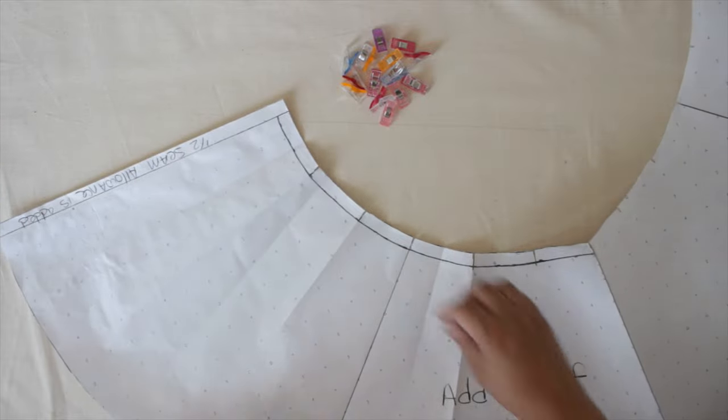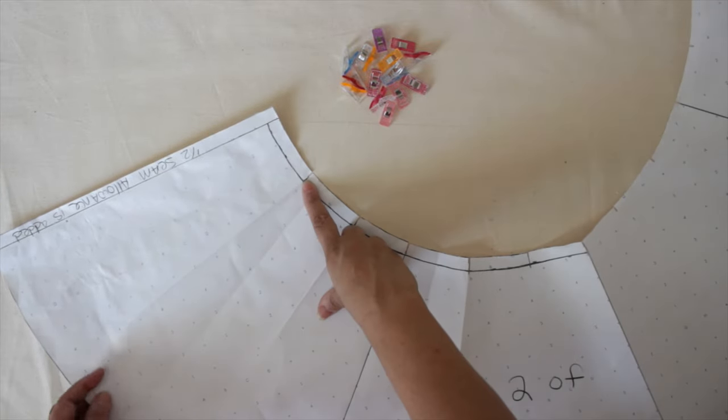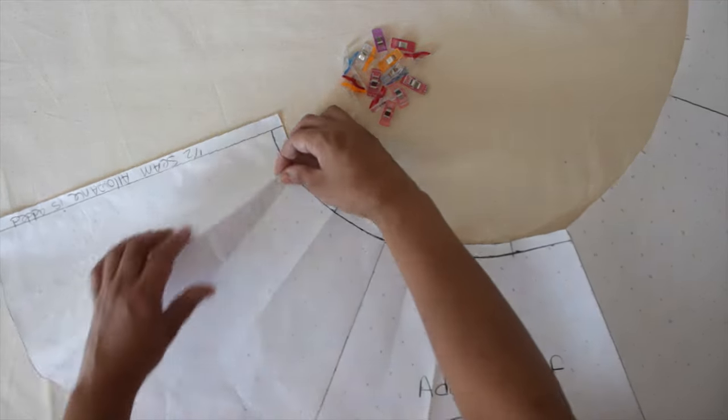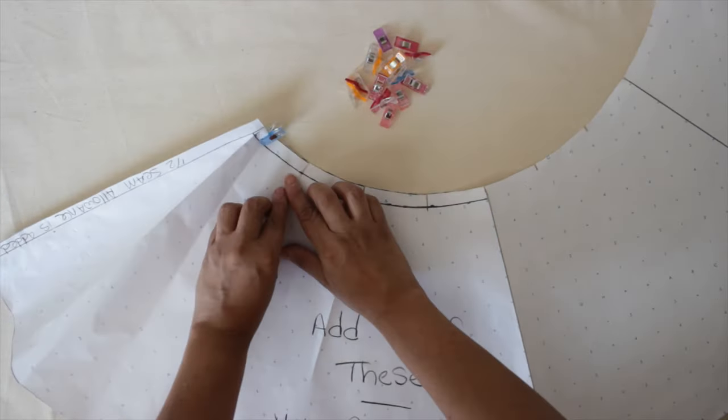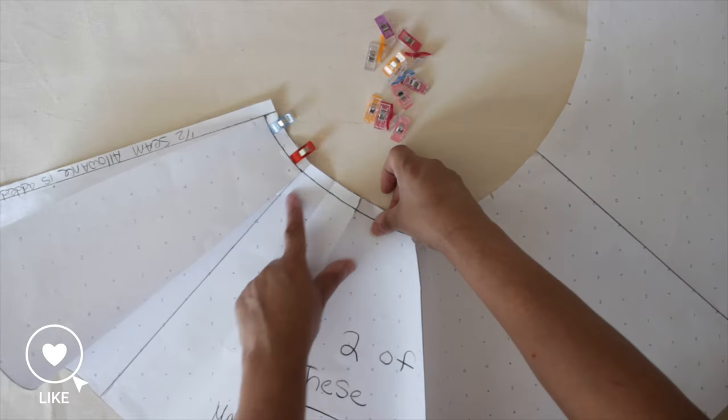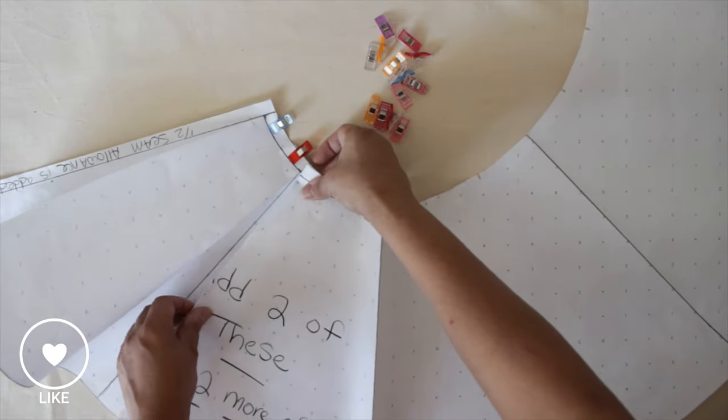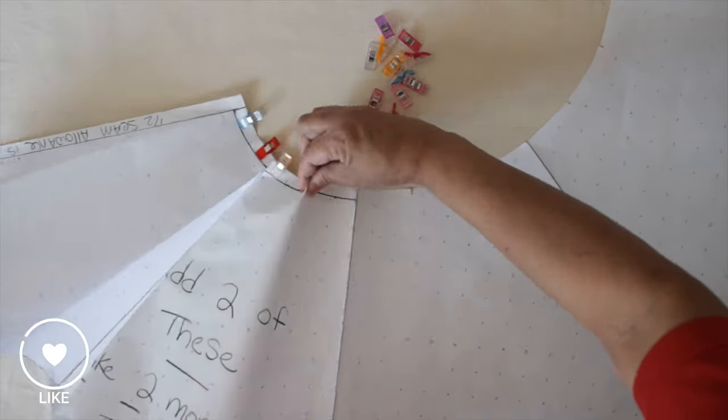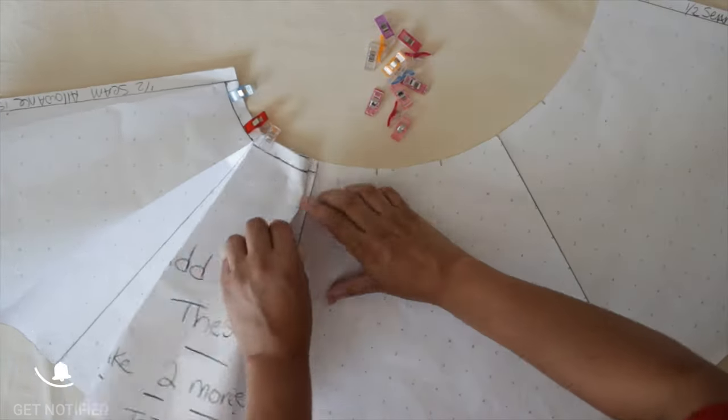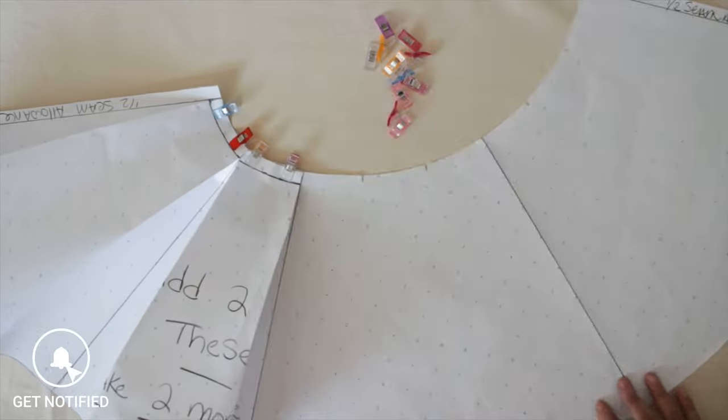Let's get into the fun part. Take one notch to the left like this, then take the other notch to the right. Let's do it again. Take one notch to the left and the other notch to the right. You do the same thing to the rest of the panels like this.